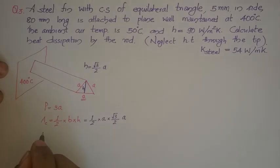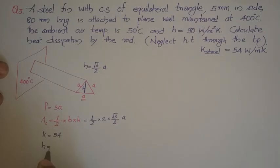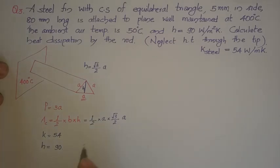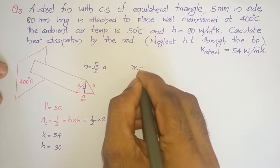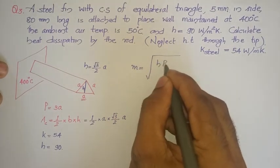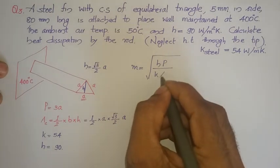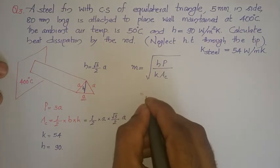The k value for steel is 54 watts per meter Kelvin (SI units) and the heat transfer coefficient h is given as 90 watts per meter squared Kelvin. You have to first evaluate the quantity m, where m is defined as the square root of (h·P) divided by (k·Ac).